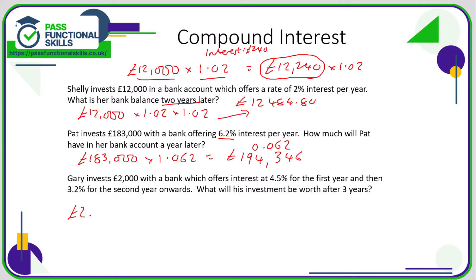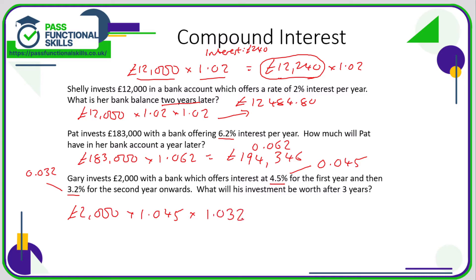Let's look at the final example: £2,000 in the first year at 4.5%. The multiplier for 4.5% is 0.045, so for an increase it's 1.045. In the second year, 3.2% gives a basic multiplier of 0.032, so for an increase it's 1.032. We want the balance after three years — the first year uses 1.045, and the second and third years both use 1.032. So: 2,000 times 1.045 times 1.032 times 1.032, which comes to £2,225.90.